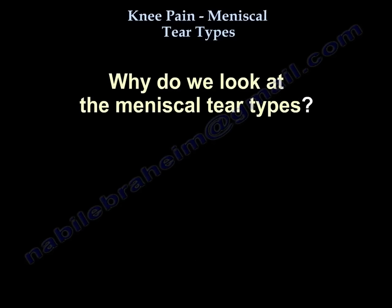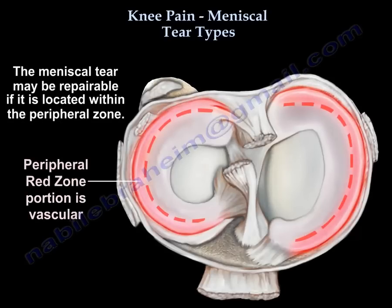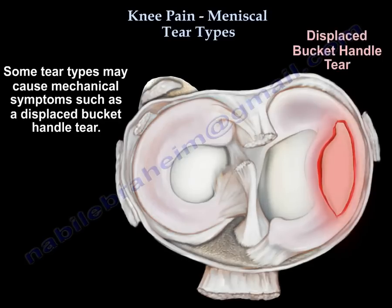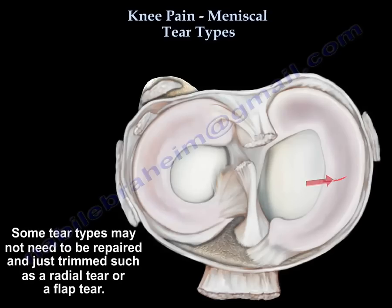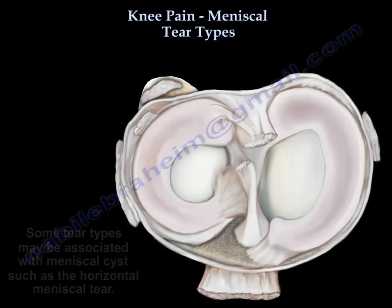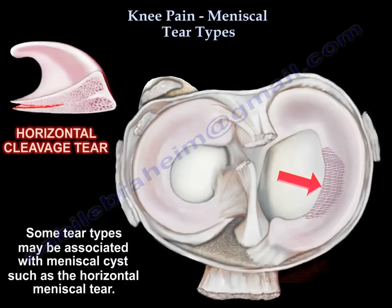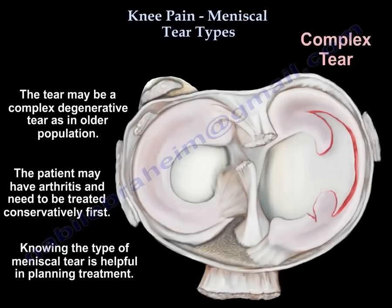So why do we look at the types? Because some may be repairable if they are peripheral tears. Some cause mechanical symptoms such as displaced bucket handle tears. Some cannot be repaired at all and may need trimming or partial excision to a stable rim, like the radial tear or a flap tear. Some may have a meniscal cyst, like the horizontal tear. Some may be complex degenerative tears in older patients with arthritis, who may start with conservative treatment. Knowing the type of tear helps in planning your treatment.